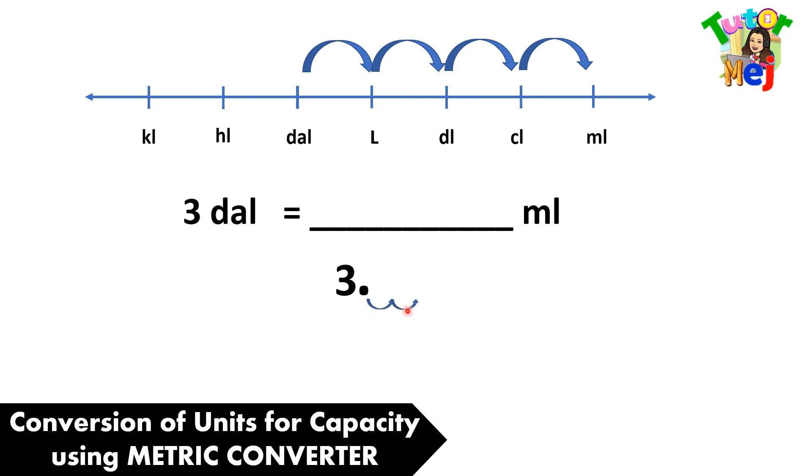and then count 1, 2, 3, 4. Then change the position of the decimal point, put it here, and affix zeros. Therefore, 3 decaliters equals 30,000 milliliters.